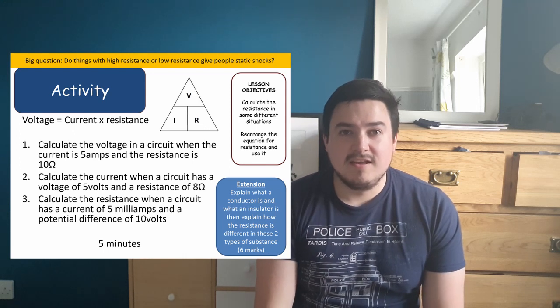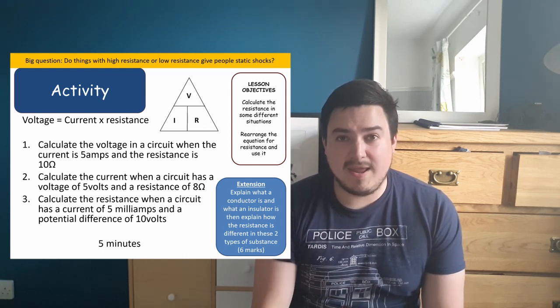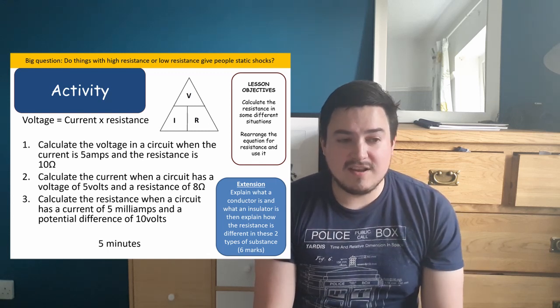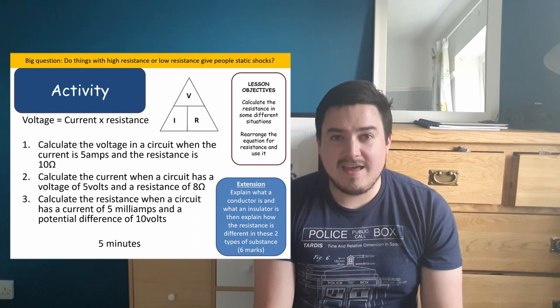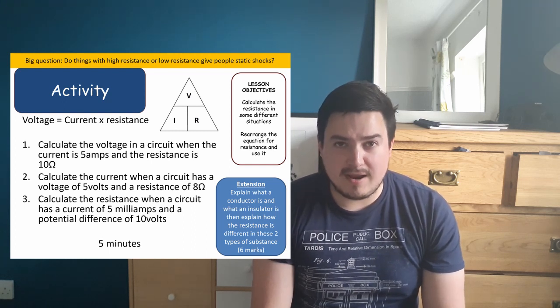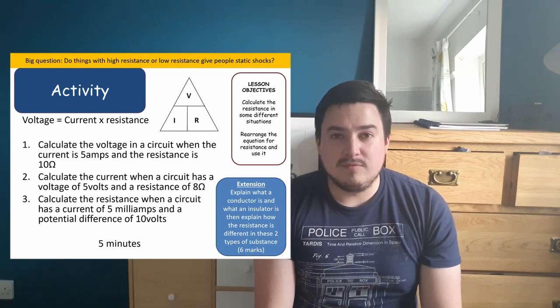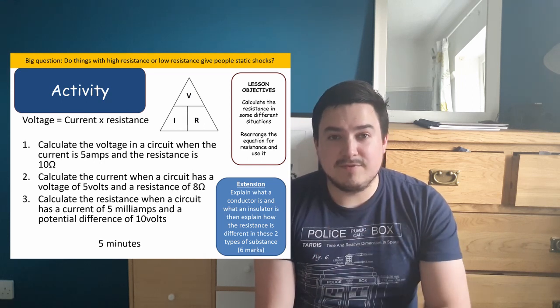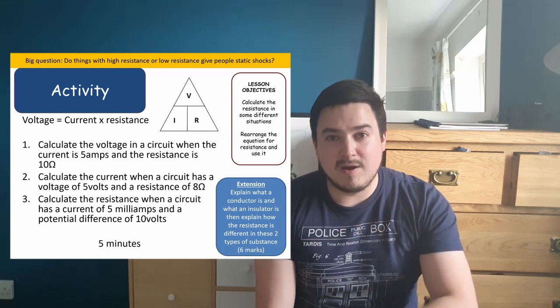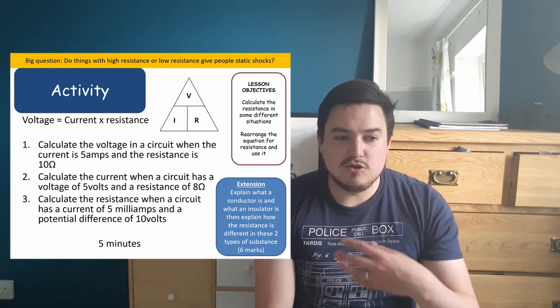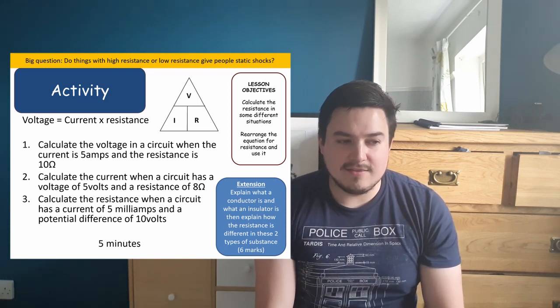Next you need to know how to calculate these things. In the slide there are three questions for you to have a go at. Please pause the video and attempt those three questions. The equation is written at the top of the slide, and there's also a triangle to help you rearrange it. If you cover up the quantity you want to find, you'll be left with the two known values — voltage at the top is divided by whatever's underneath, and the two at the bottom are multiplied together.